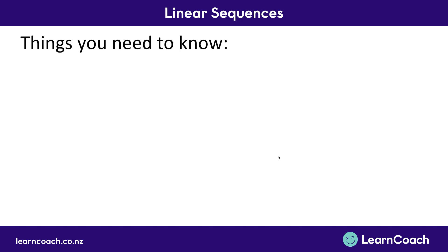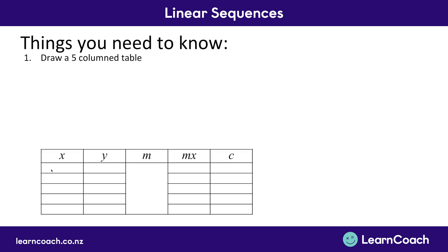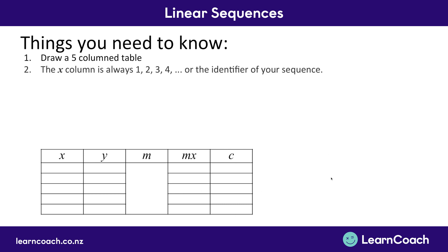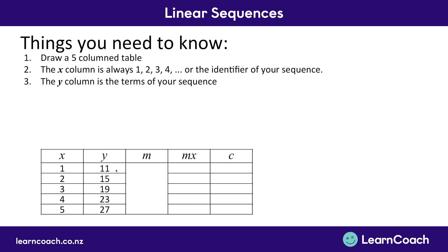What you need to know from this video: first, draw a 5-column table with X, Y, M, MX, and C. Fill the X column with 1, 2, 3, 4, 5 — as many numbers as you have. Then fill the Y column with the terms of your sequence — in the last example that was 11, 15, 19, 23 and 27.